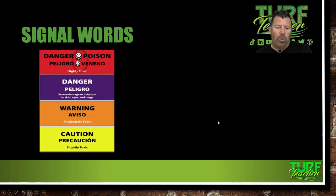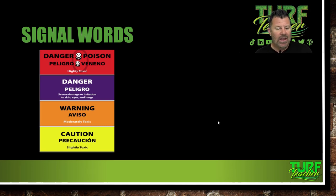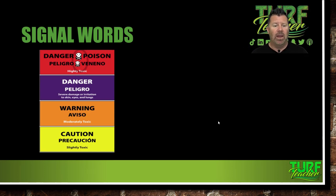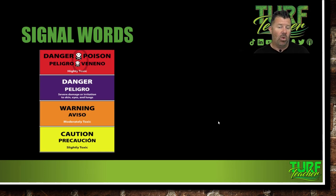Signal words you may see: Danger/Poison — which is the worst of them all — it's got to have the skull and crossbones on it. Then we have Danger, then Warning, then Caution. Most of the stuff we're spraying is Caution. We may have a Warning every so often. Agricultural guys and farmers are going to be dealing with a lot more Danger/Poison. Some of you may have your right-of-way license or aquatics license, so you may see a lot more different pesticides than we do in the ornamental and turf side. That's pretty much all we conduct our business in.